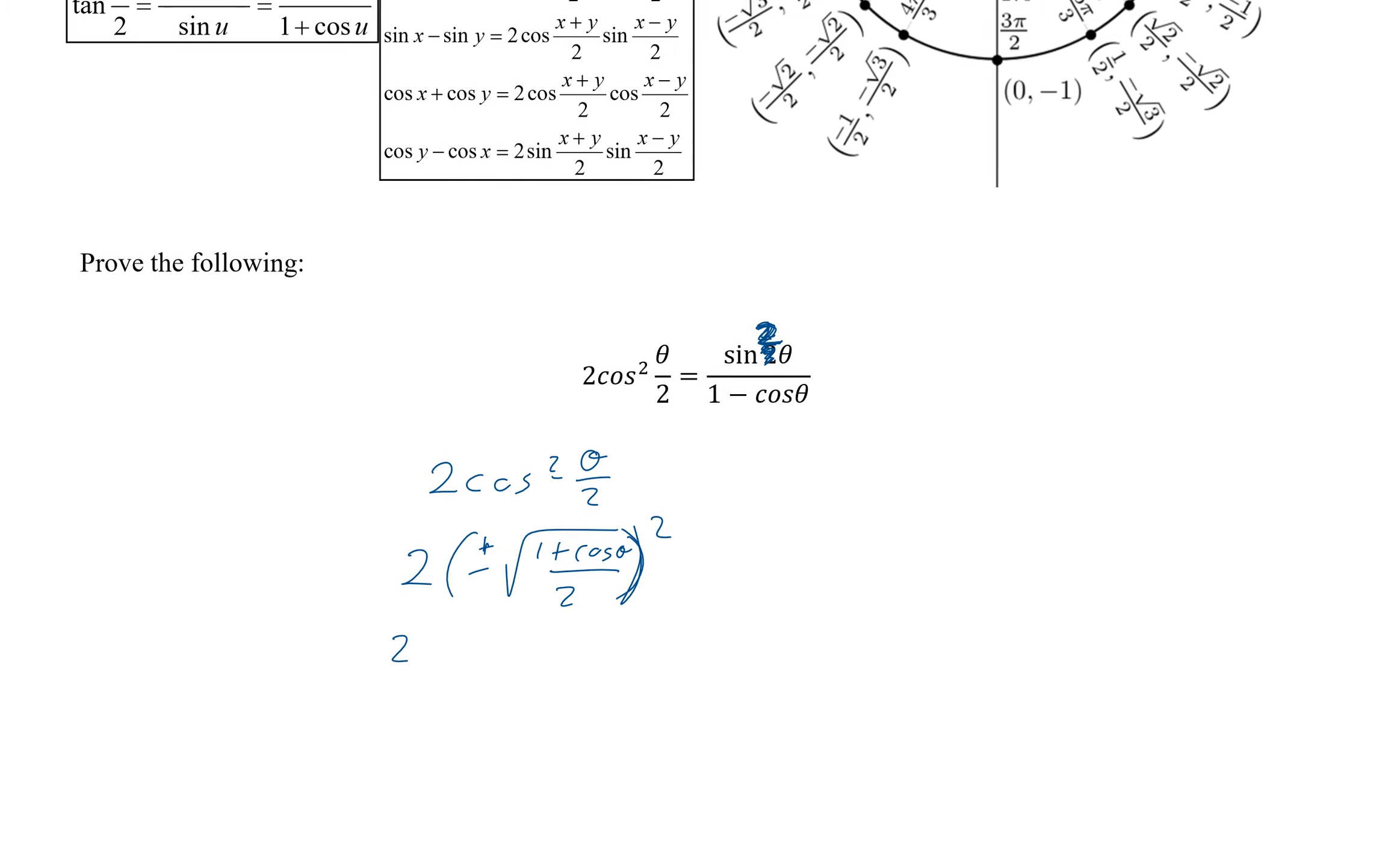So plus or minus square root 1 plus cosine theta all over 2 squared. And then the square will cancel the square root and the plus or minus, giving us 1 plus cosine theta over 2. So this obviously doesn't look anything like what we're going for, which is sine squared theta over 1 minus cosine theta.